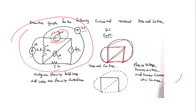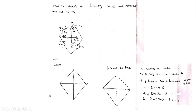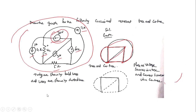Now we will see how to draw a graph, and then represent the tree and co-tree. The problem asks: draw the graph for the following circuit and represent the tree and co-tree. This is the given circuit diagram.